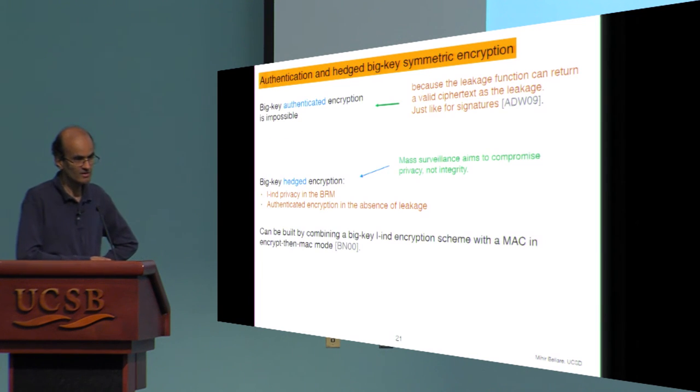It would be nice in this context to have integrity or authenticity. But it turns out that by a result of Alvin, Dodis, and Wicks on signatures, whose technique also applies here, that's simply impossible. Because the leakage can always include a valid ciphertext. So what we do instead is say that perhaps it would be worthwhile if integrity was provided in the absence of leakage and privacy in the presence of it, with the rationale that mass surveillance is largely about compromising privacy, not integrity. And then these types of hedge schemes we can build relatively easily.